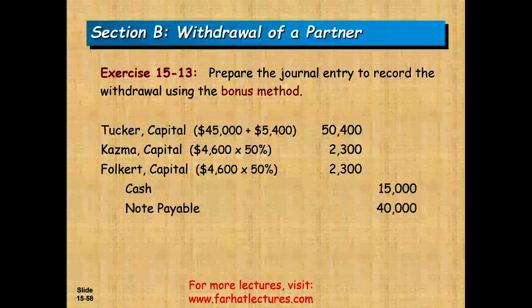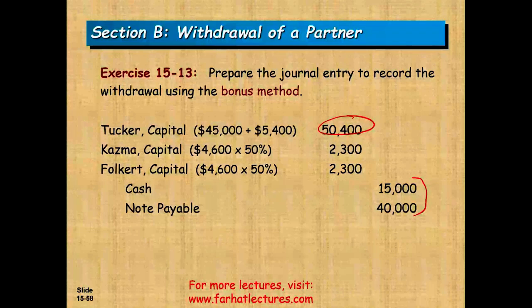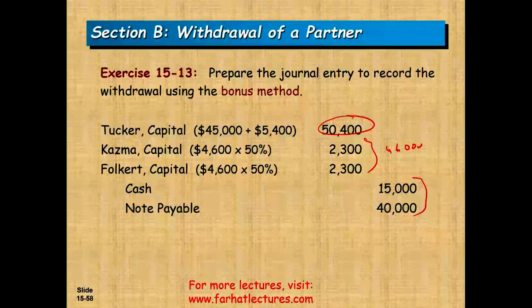To summarize the journal entry: we gave Tucker $55,000 while his balance was $50,400. Therefore the other two partners absorb the $4,600 difference under the bonus method.